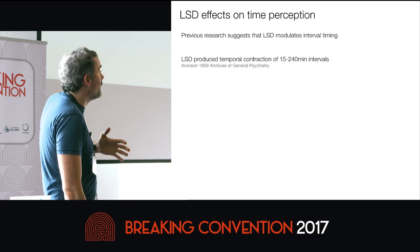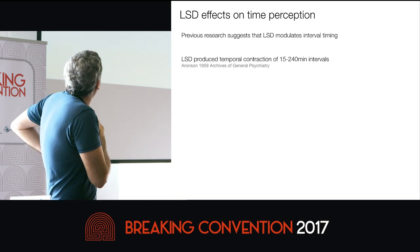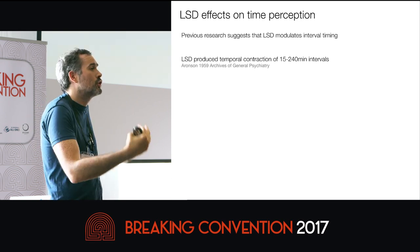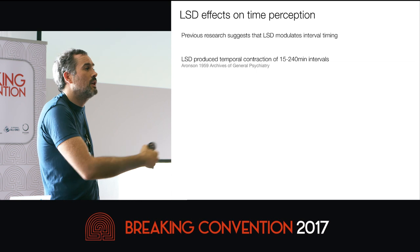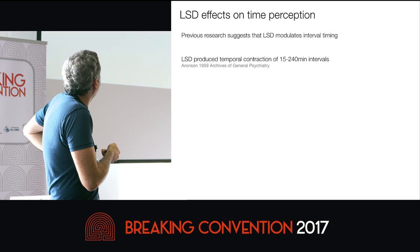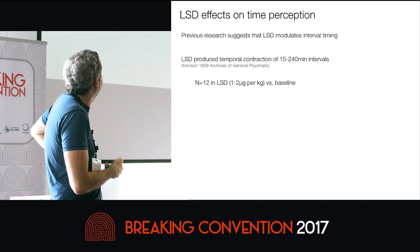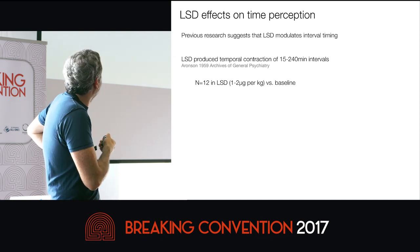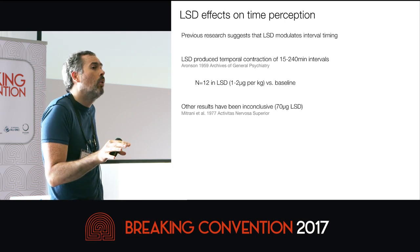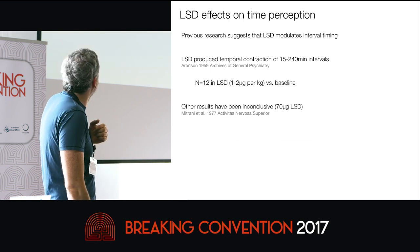Research in this domain in humans tends to be much older. A study by Aronson in the late 1950s showed that LSD produced temporal contraction of long intervals ranging from 15 to 240 minutes, though in a relatively small sample. Other results have been inconclusive — a study by Natrani and colleagues in the late 1970s found no robust effects of LSD on interval timing. One concern with this literature is that most studies rely on self-report measures of time perception, so we don't know if these translate to more robust behavioral measures.